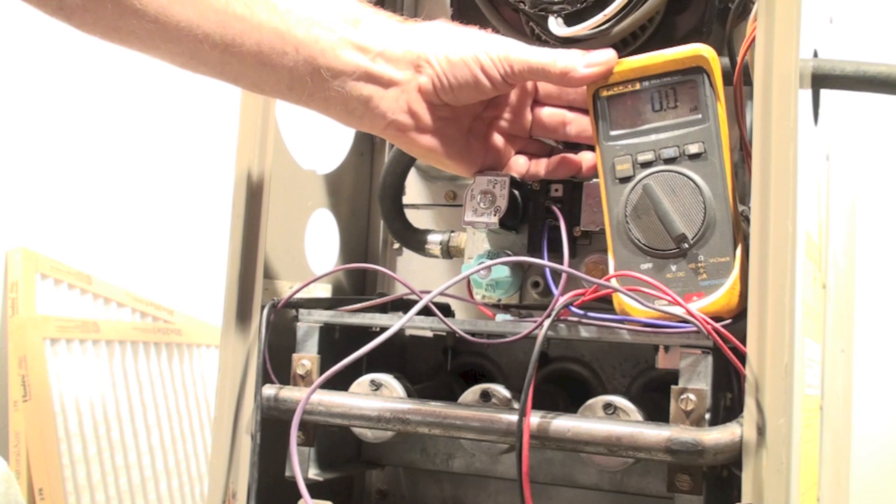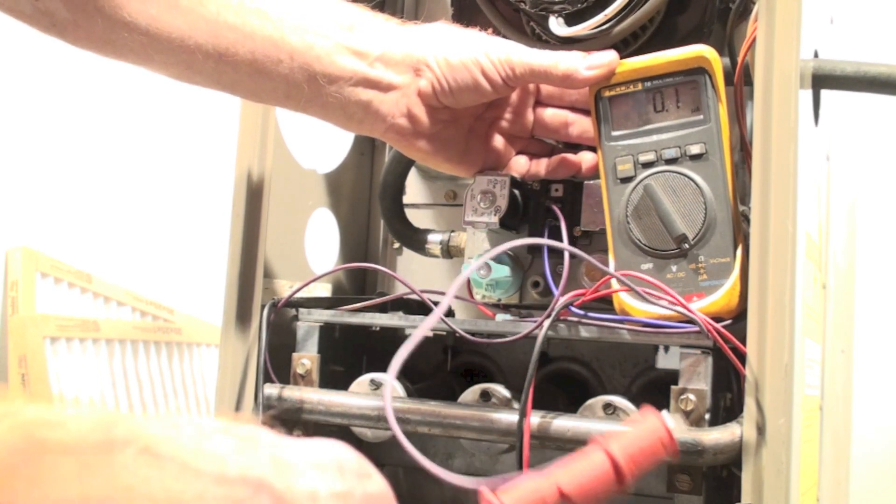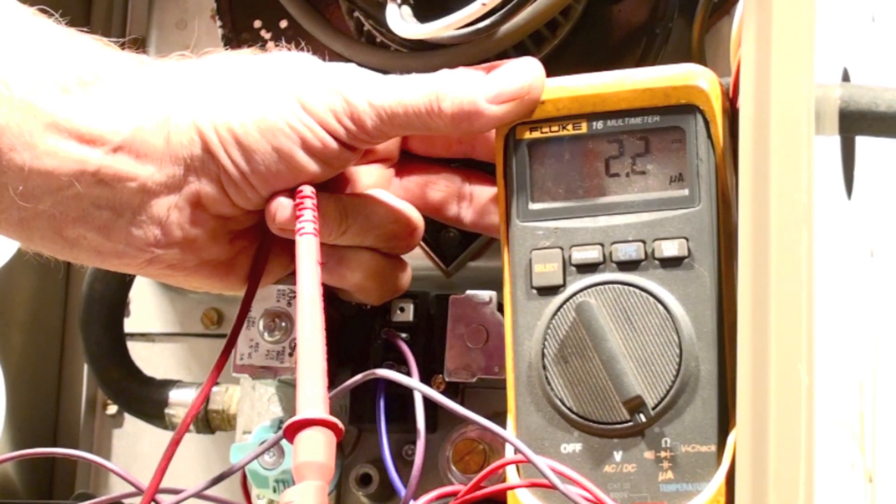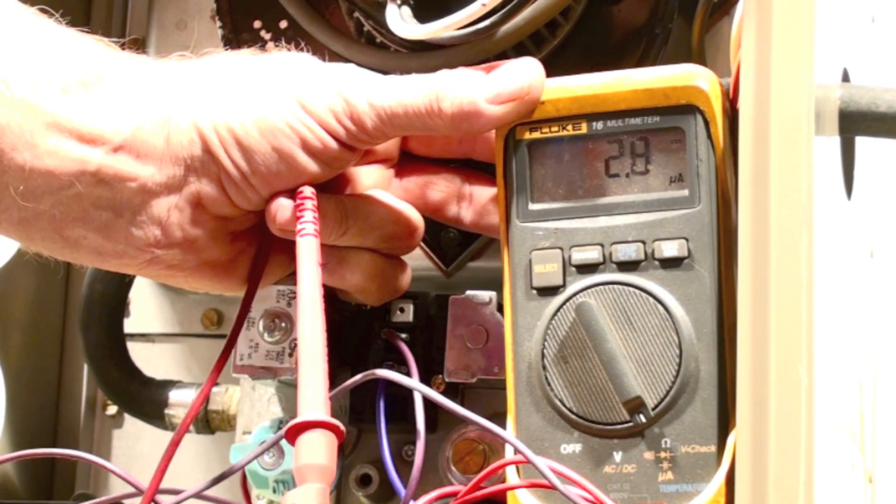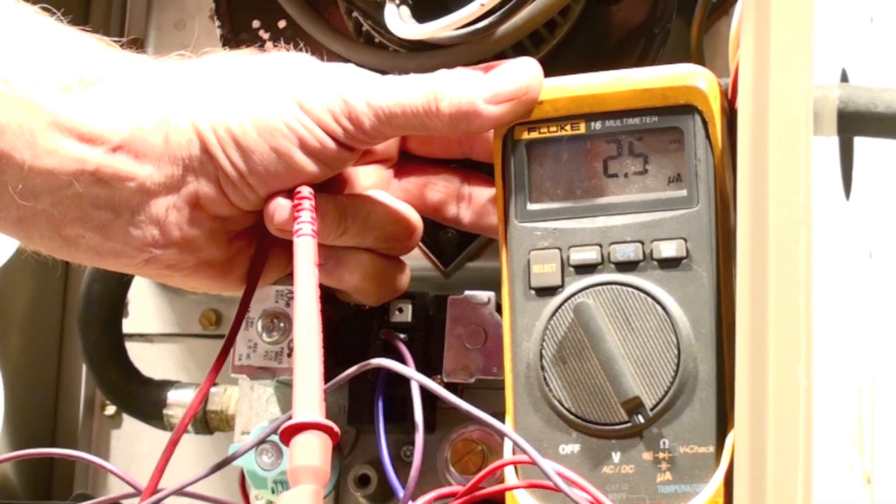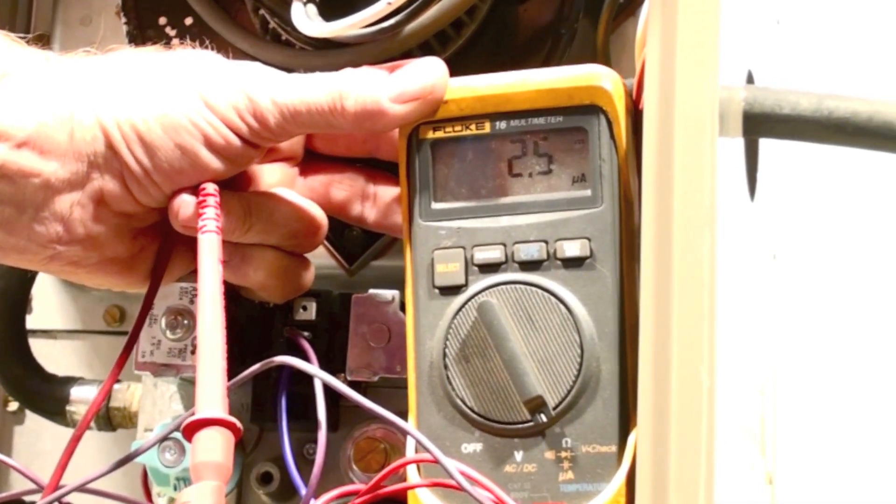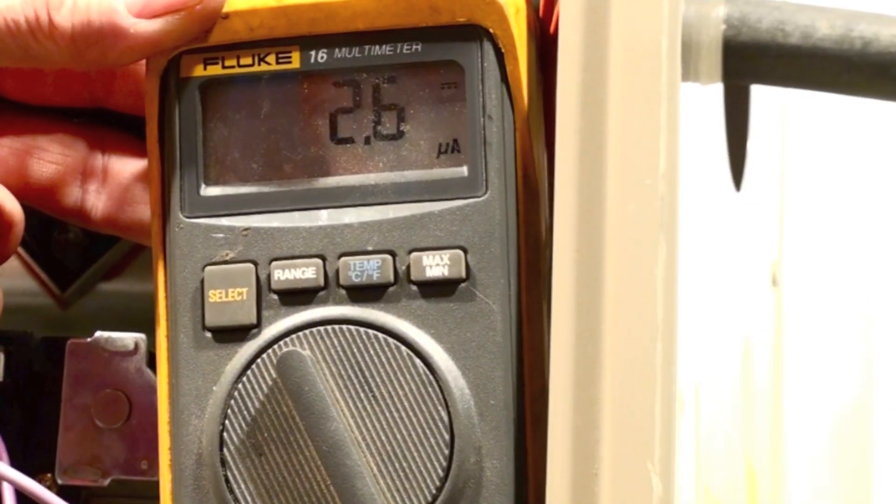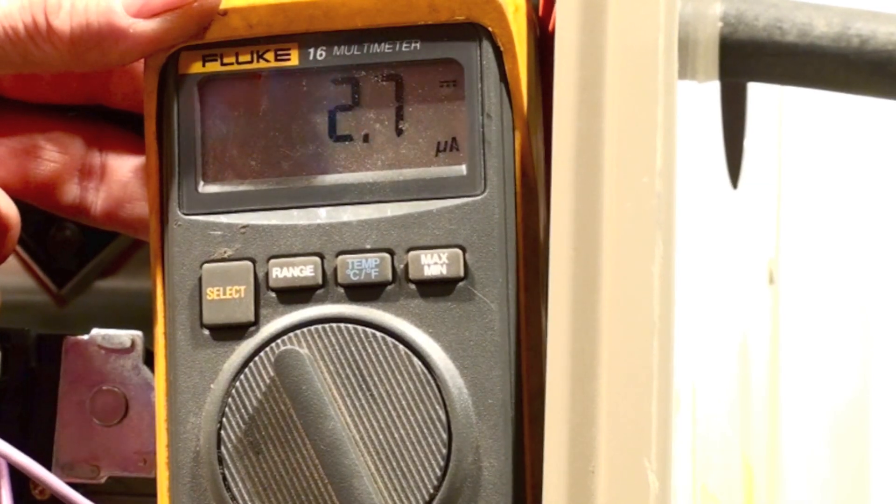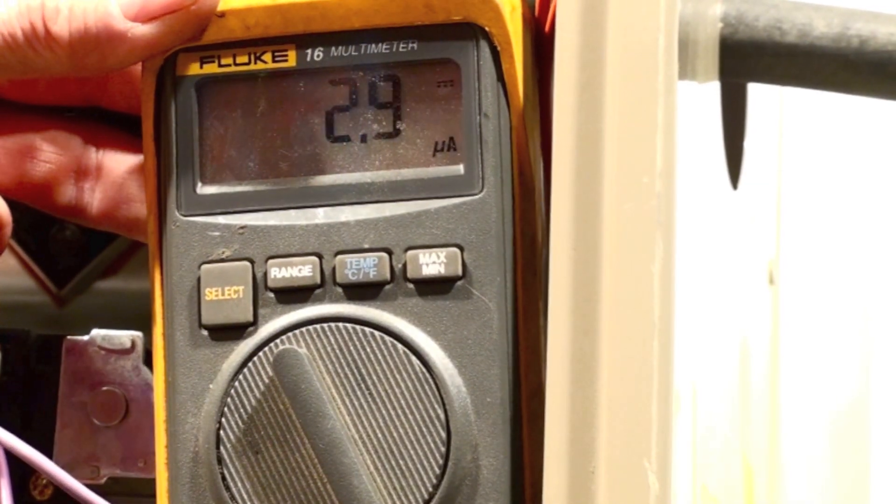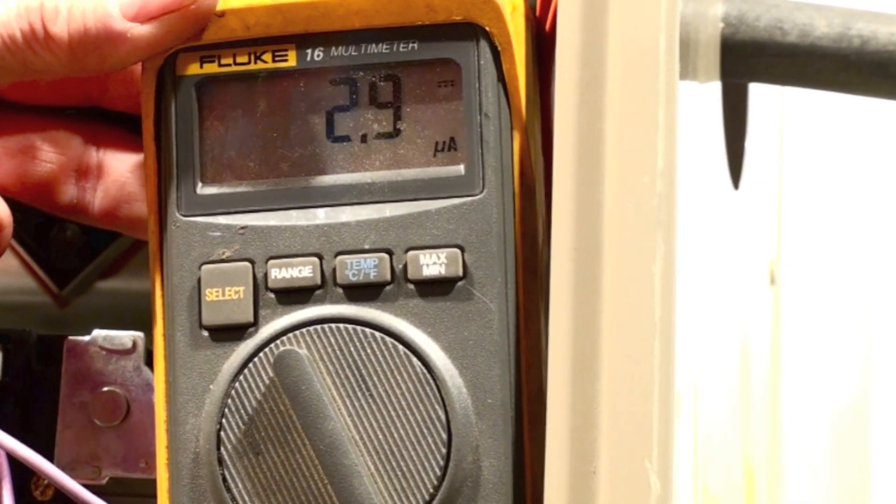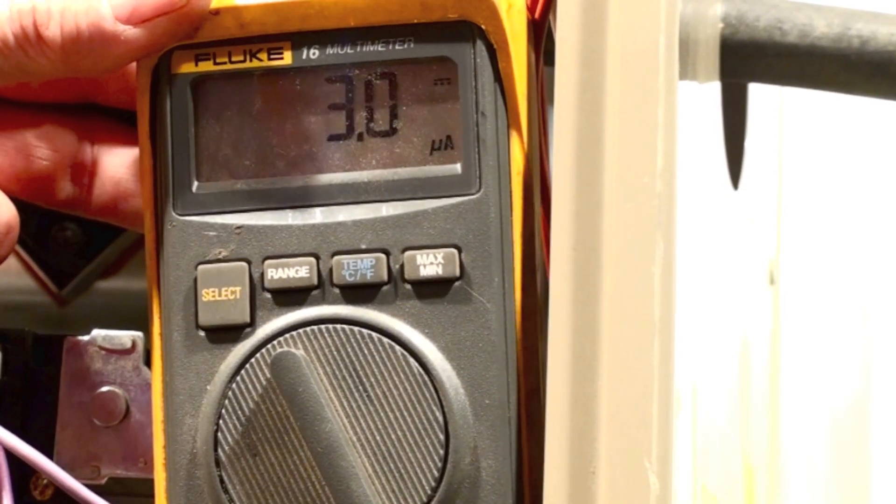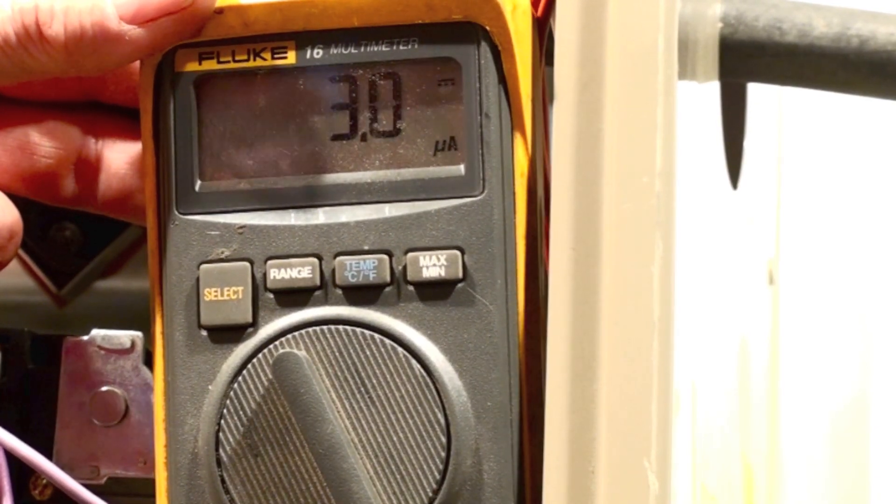Okay, it looks like we're settling at about 2.8, 2.9. Most of these will prove flame at 0.5 microamps, so this one's well within the reading. Now what I like to do, I always clean the flame rod when I do a service. I like to check the flame rod condition before I clean it.